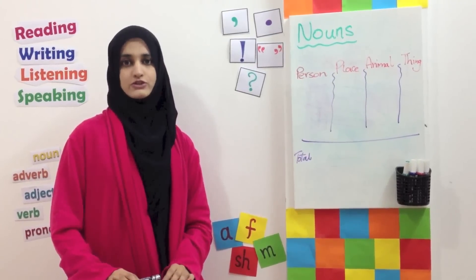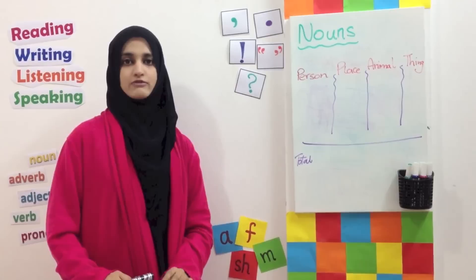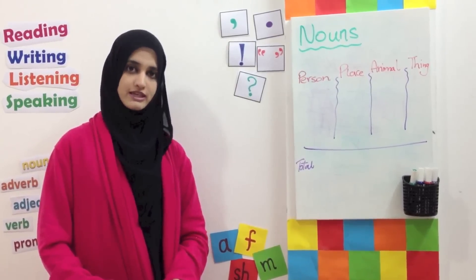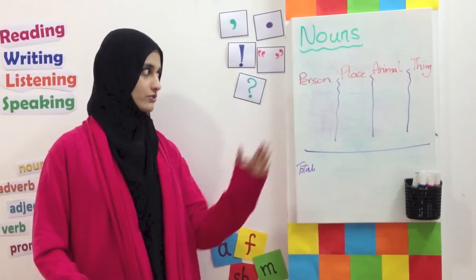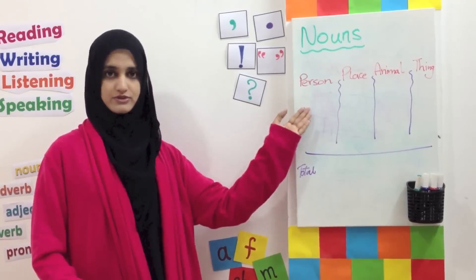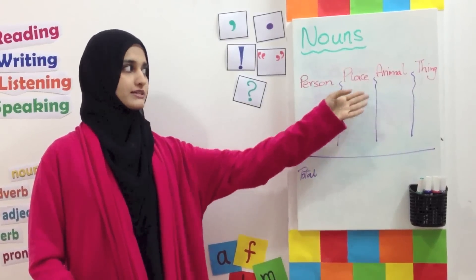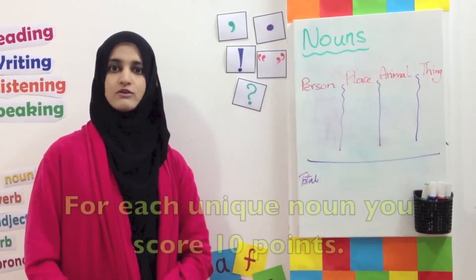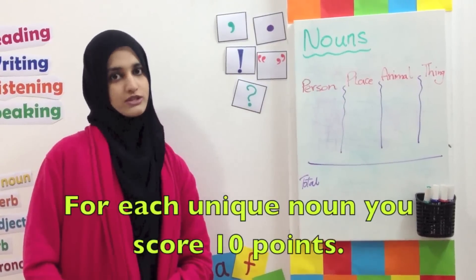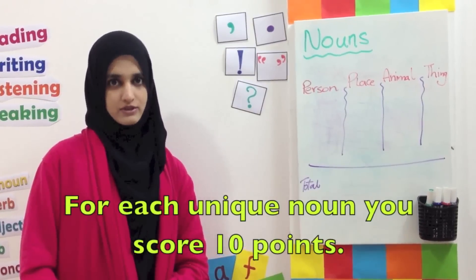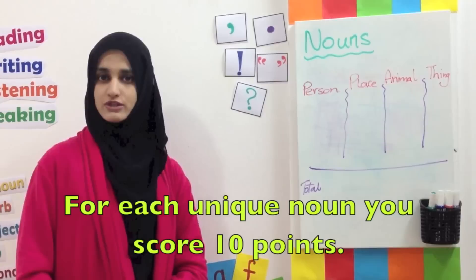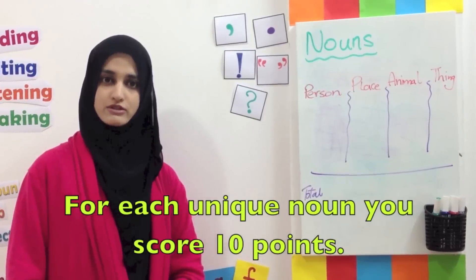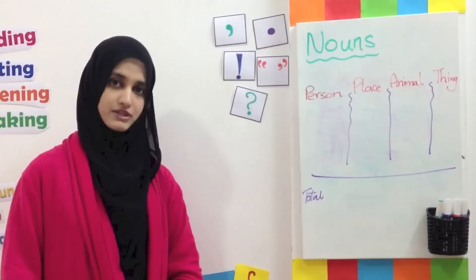Then you are going to give yourself points. You are going to read out what you wrote as a person, place, animal, and thing. For each unique noun, you are going to give yourself 10 points.